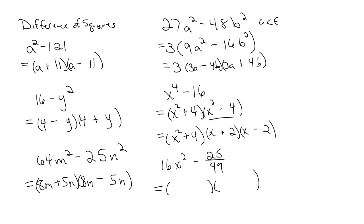So we have 4 and 4, x and x. Well, 25 comes from 5, 49 comes from 7. So 5 over 7, 5 over 7. And again, opposite signs.